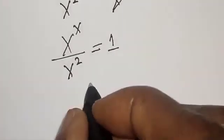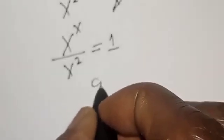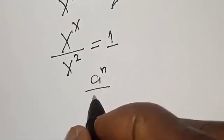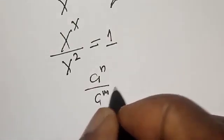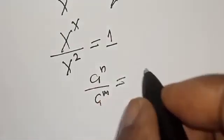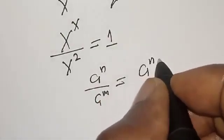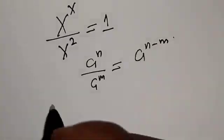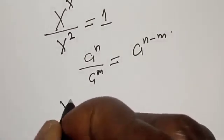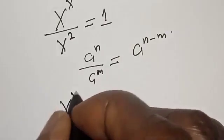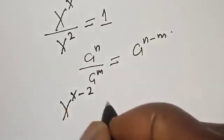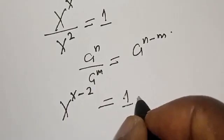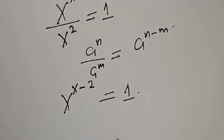Now remember that if you have a raised to power n over a raised to power m, this is the same thing as a raised to power n minus m. Then our left hand side becomes s raised to power s minus two is equal to one.